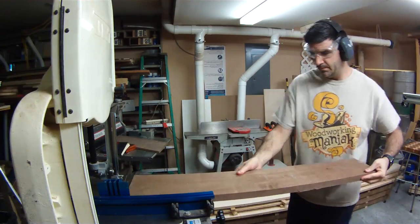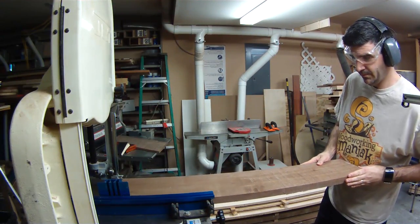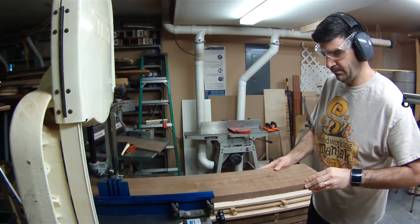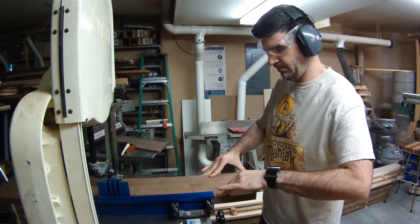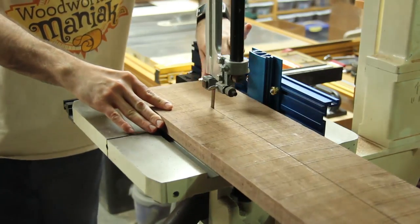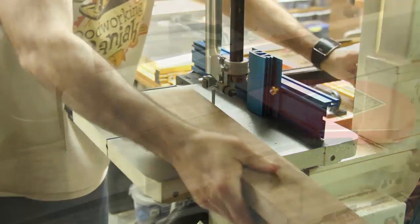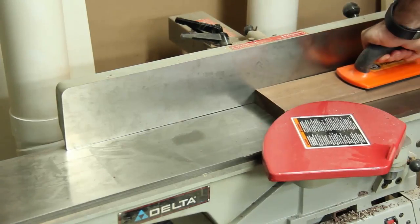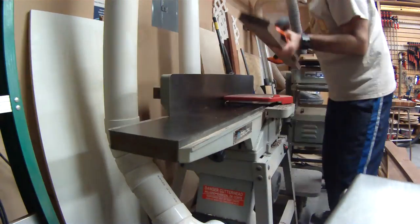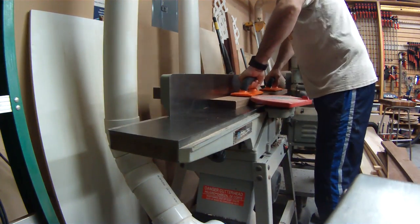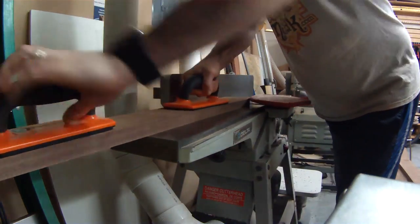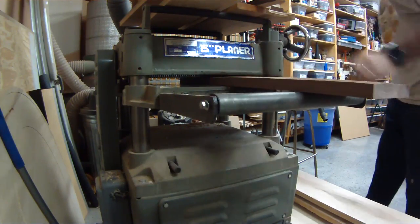Then the rest of the boards I split down the center to already have half the thickness, mainly because it was over six inches wide, which is wider than what my jointer could have handled. That's the reason for the first board I actually had to joint the sides before I could even send it through the planer.